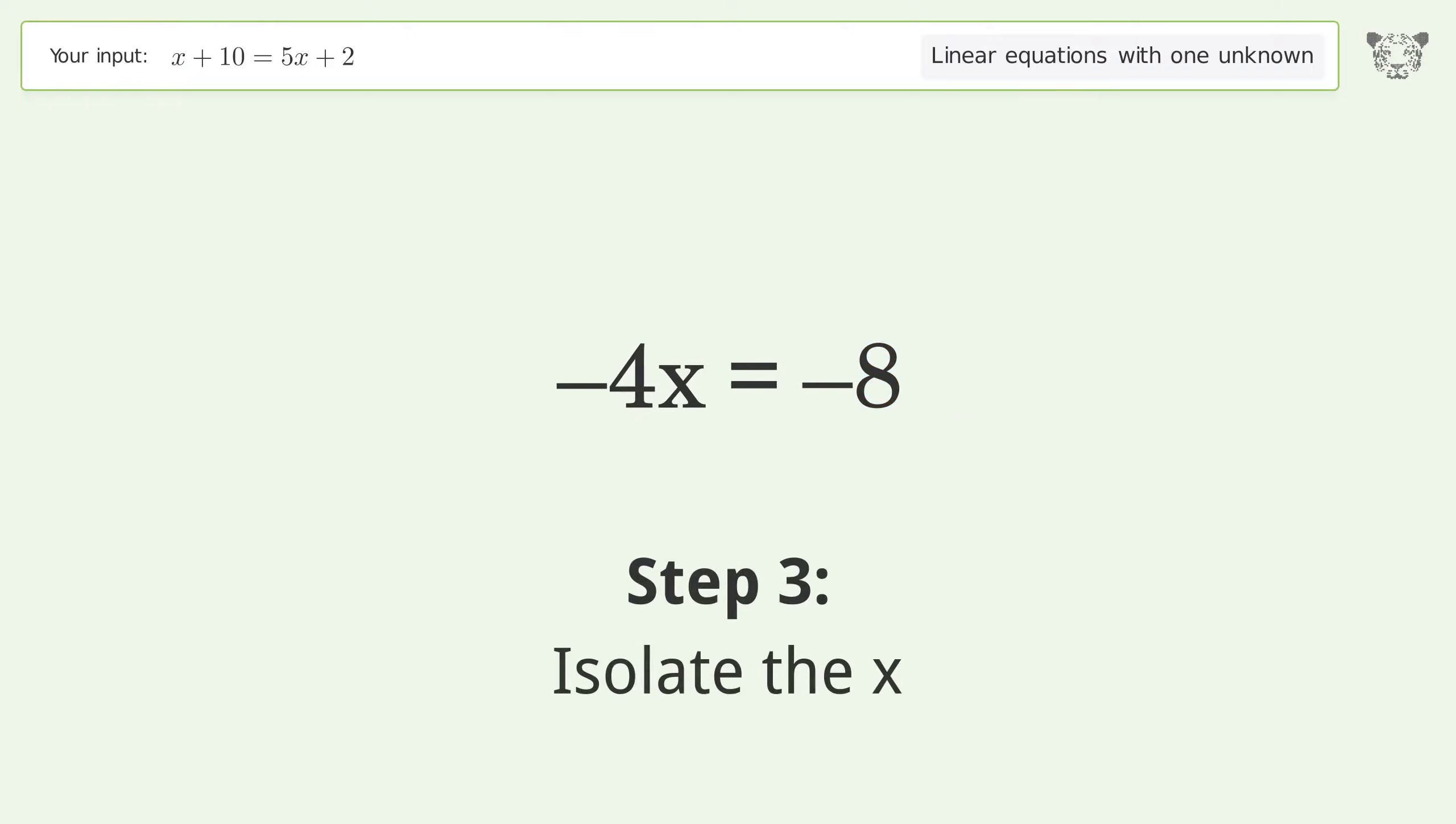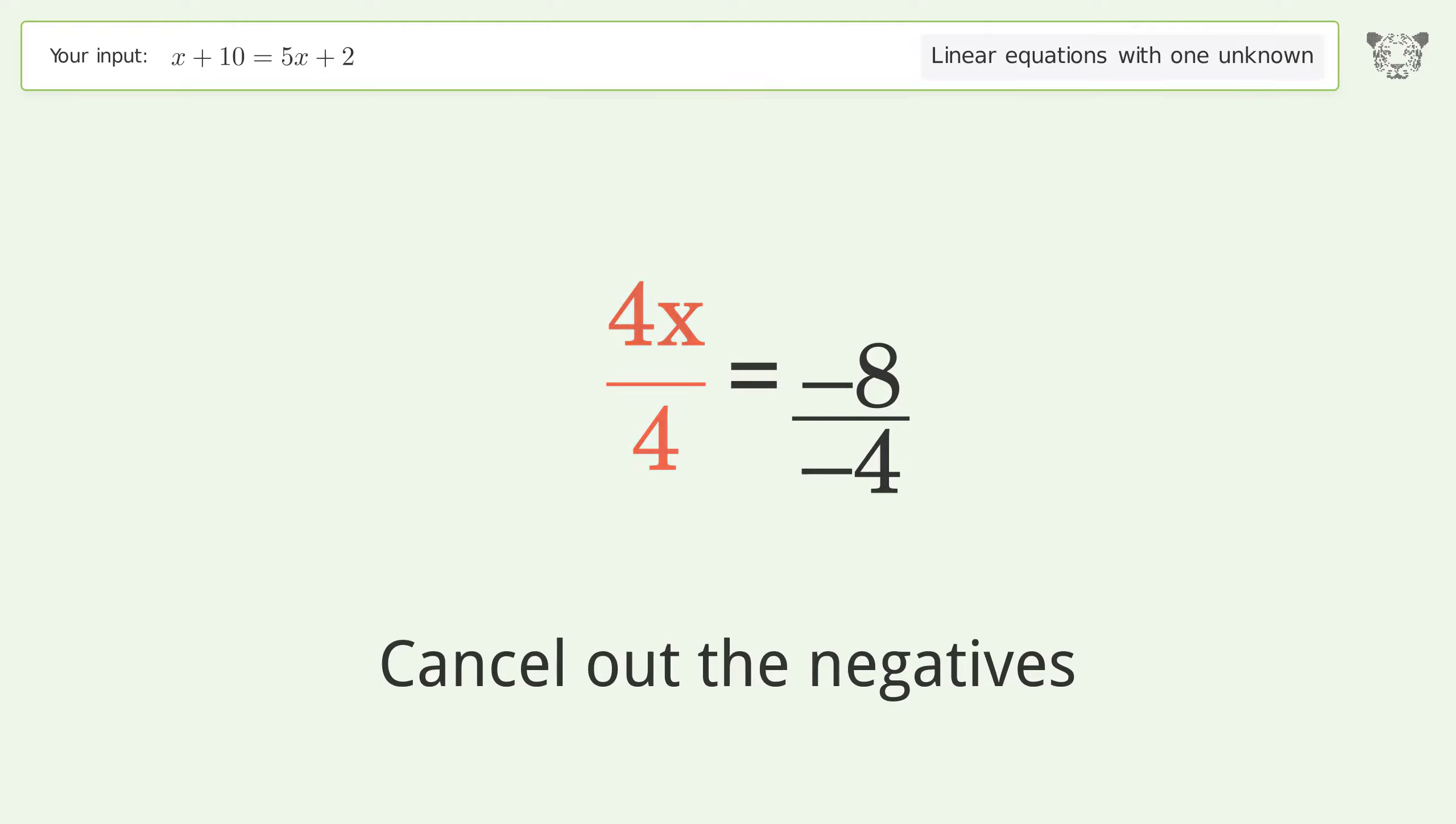Isolate the x. Divide both sides by negative 4. Cancel out the negatives. Simplify the fraction. Cancel out the negatives.